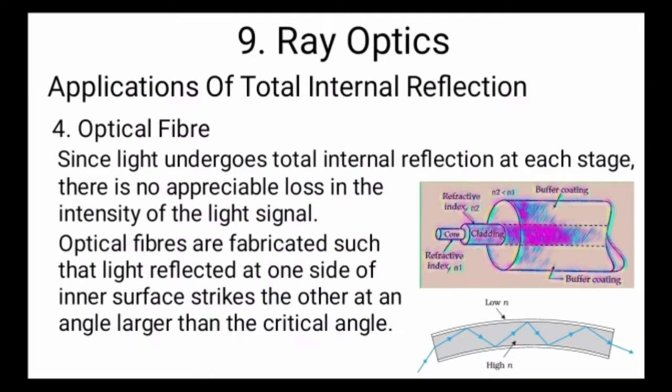Since light undergoes total internal reflection at each stage, there is no appreciable loss in the intensity of the light signal. Optical fibers are fabricated such that the light reflected at one end of the inner surface strikes the other at an angle larger than the critical angle.